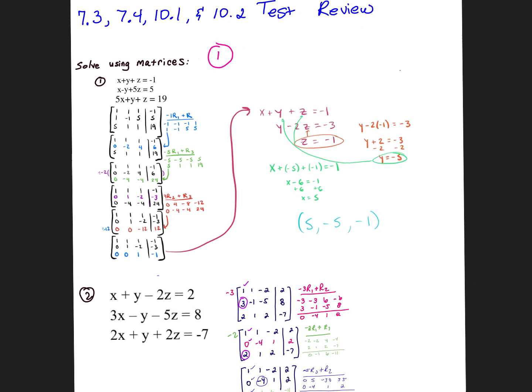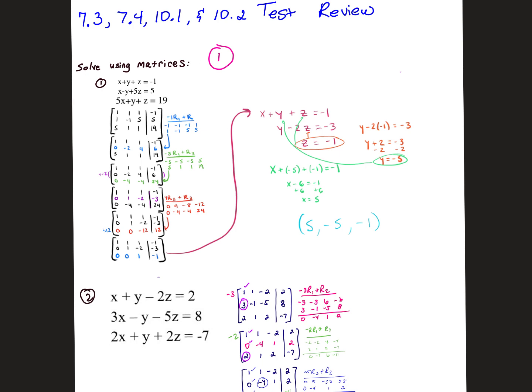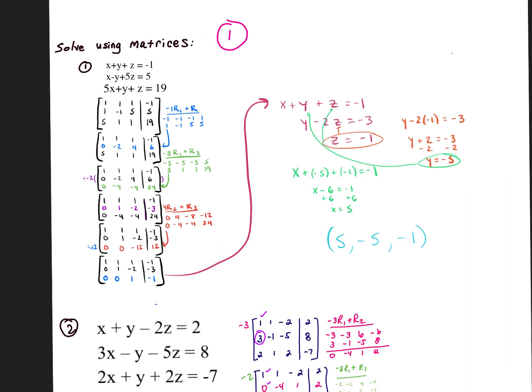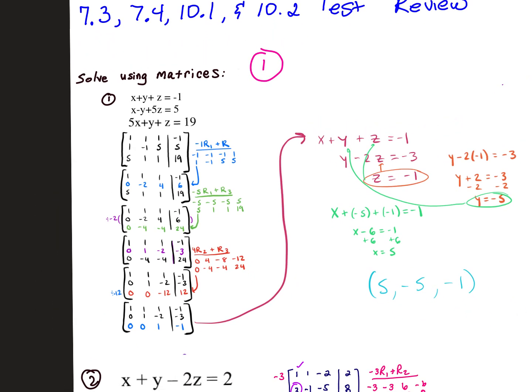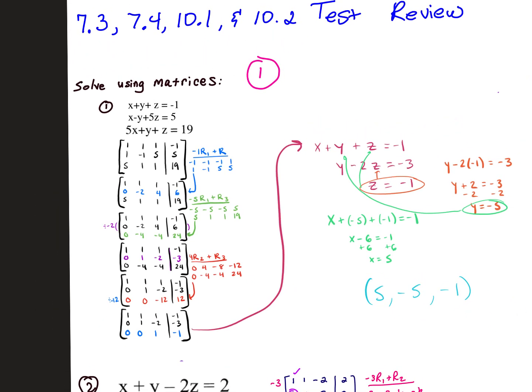One question will be like this. Given the three equations with three variables, you're going to be asked to solve using matrices. That's our elementary row operations. So just make sure that you're going through your methodical, your step-by-step, and you take your time.